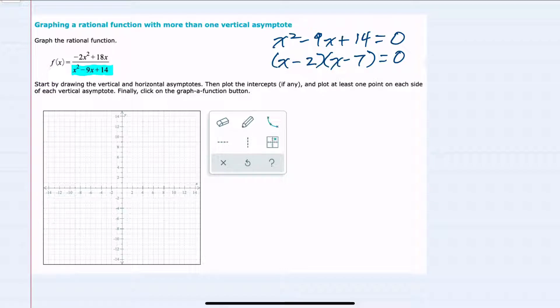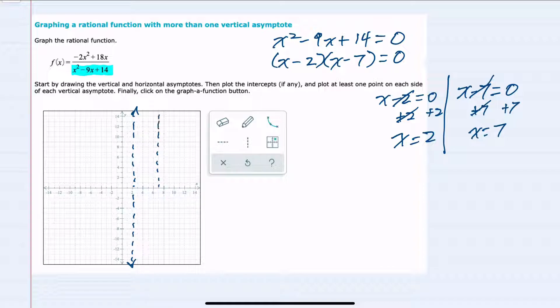Setting each of these factors equal to zero, the first factor, x minus 2 equals zero, gives us x equals a positive 2 as a vertical asymptote. The second factor, x minus 7 equals zero, solving for x, gives us x equals a positive 7. So a second asymptote through x equals 7.